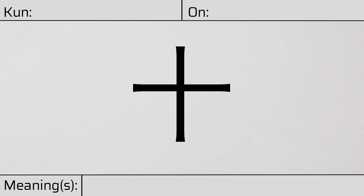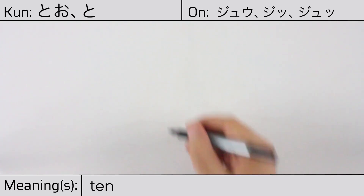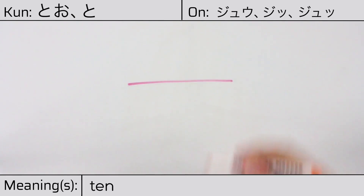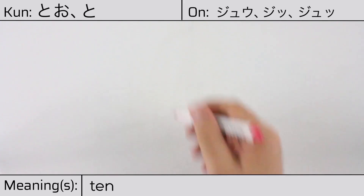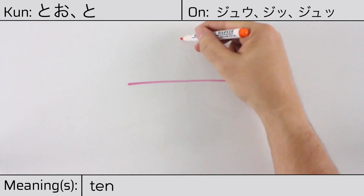This kanji has kunyomi or Japanese readings of to or to, and it has onyomi or Chinese readings of jiu or ji. This character has the meaning ten. Here is the stroke order. This character is made up of the following radicals or parts: a vertical stroke and a horizontal stroke, or the kanji one or ichi. You can remember this kanji by the fact that this character is similar to the method of counting to four, then crossing the four to mean five — crossing this single line means ten.